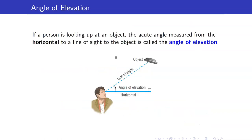Let us have some word problems involving these special angles. First, let us define the angle of elevation. If a person is looking up at an object, the acute angle measured from the horizontal — you always draw a horizontal line from the person and then the line of sight connecting the person and the object. The angle made by the horizontal line and the line of sight is called the angle of elevation.